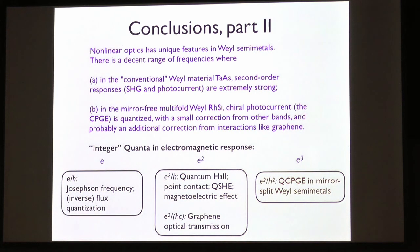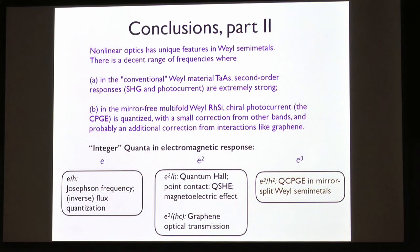The second takeaway is that in chiral Weyl semi-metals we predict a quantized photocurrent with small corrections from other bands. Maybe the way to put it is as a natural scale rather than a strict quantum. For polarization in 1D, the natural scale is e. With e² there are many quanta: quantum Hall effect, point contact, graphene optical transmission. But as far as we were able to find, this would be the first example where a natural scale is e³/h² with no material-dependent coefficients. If that magnitude can be verified even within a factor of two, we will be very happy.